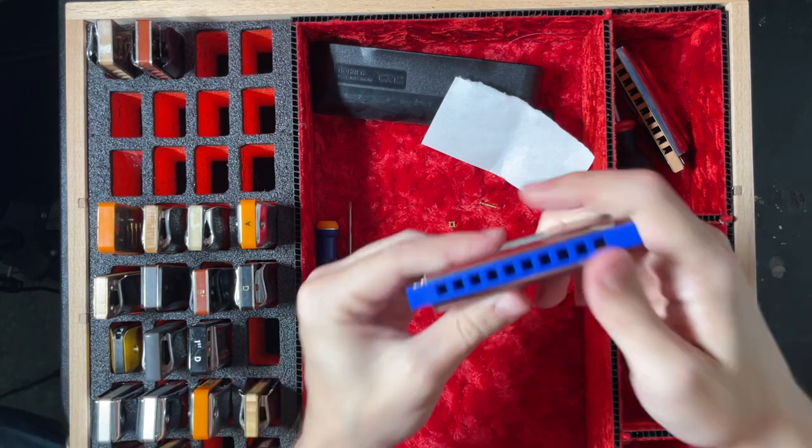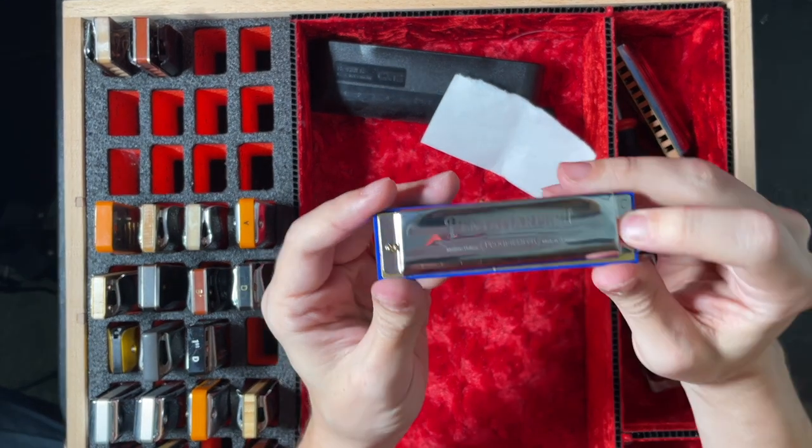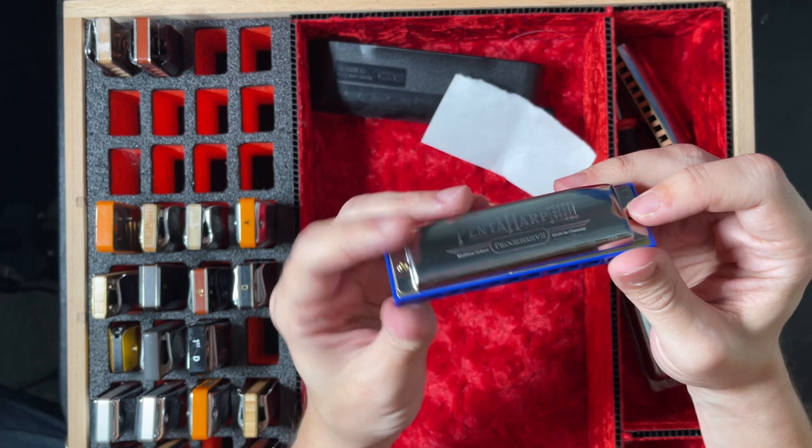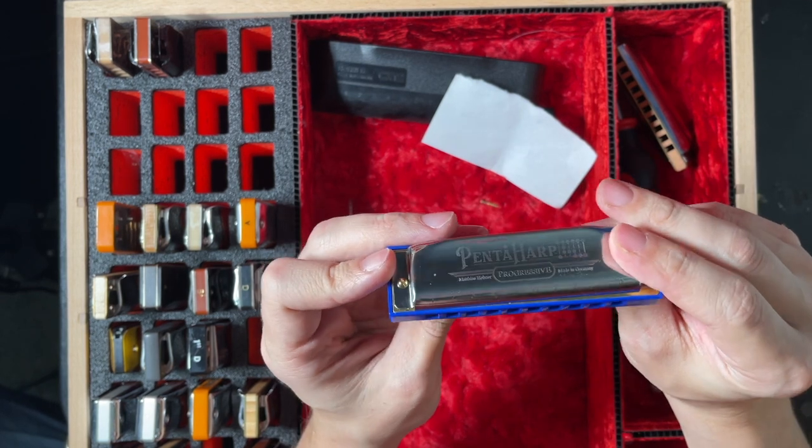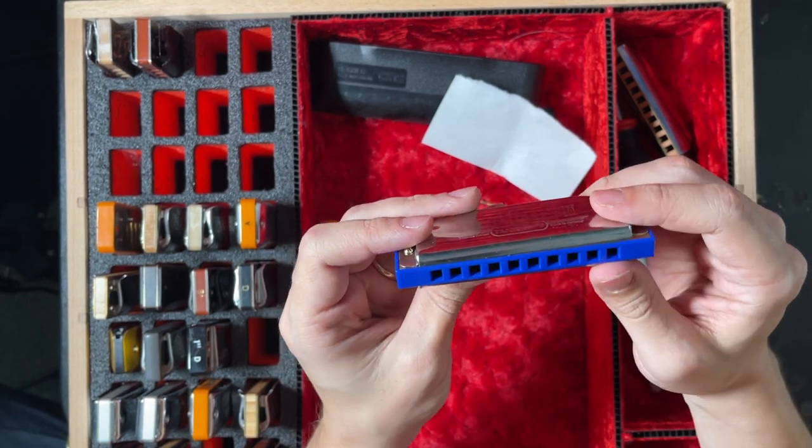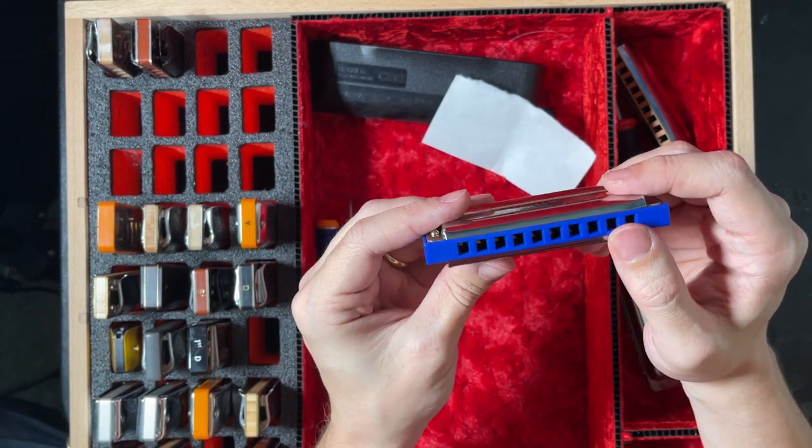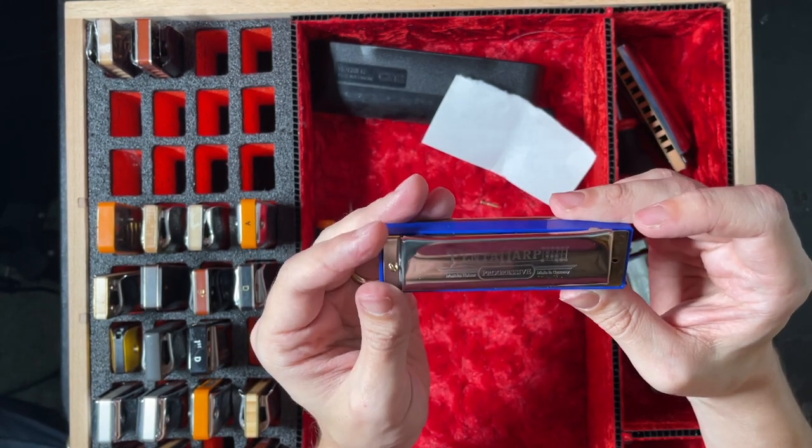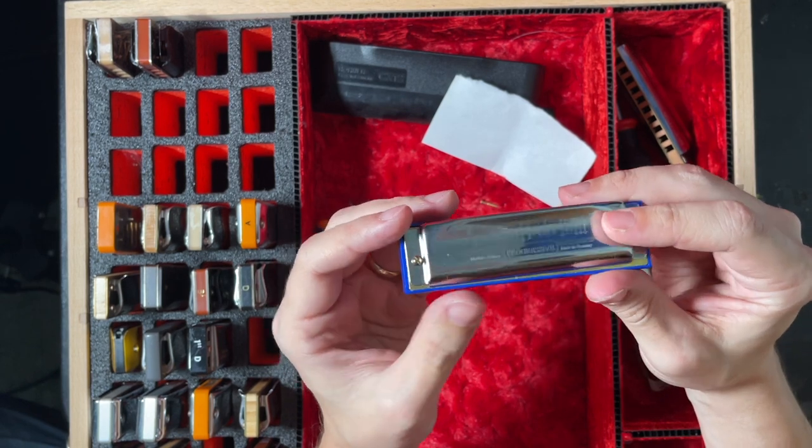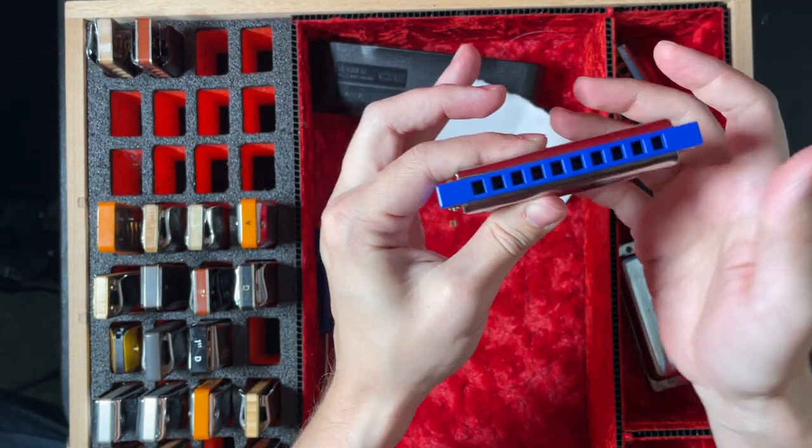Alright guys, let me show you how I go and set up my harmonica. So right here I got a Hohner Pentaharp. It's essentially a Special 20 that is using a different tuning to play the blues scale without bending. However, there are bends on this harmonica and I found that my harmonica was very badly set up out of the box. Now usually they're not like this, so here you can take a listen.